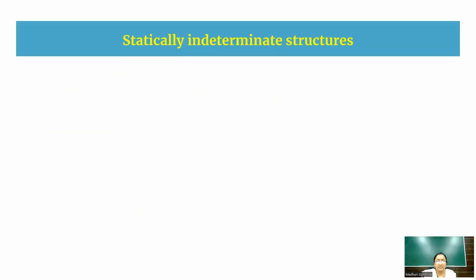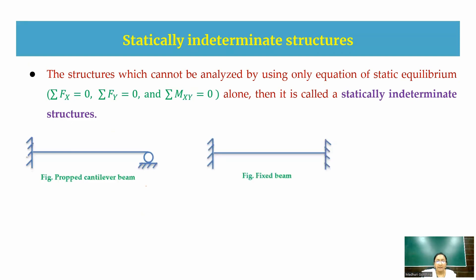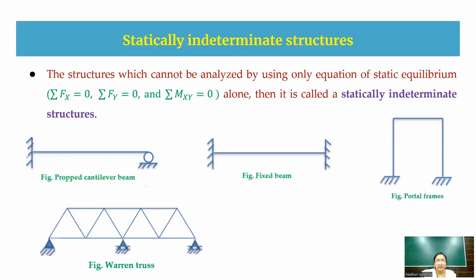Statically indeterminate structures are those which cannot be analyzed using static equilibrium conditions alone. Examples include propped cantilever beams, fixed beams, portal frames, Warren trusses, and continuous beams. In these structures, the number of unknowns is greater than the available static equilibrium conditions, so static equilibrium alone is insufficient.